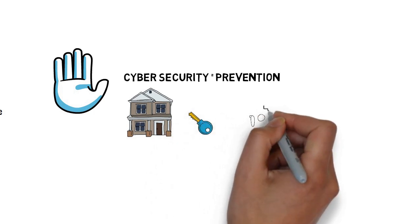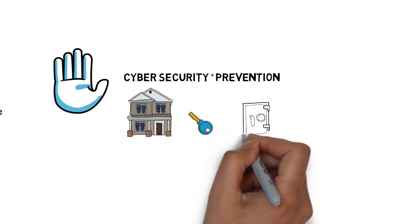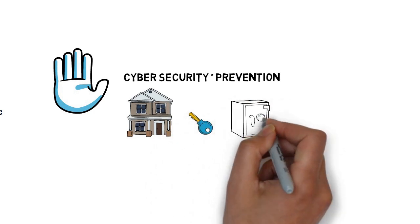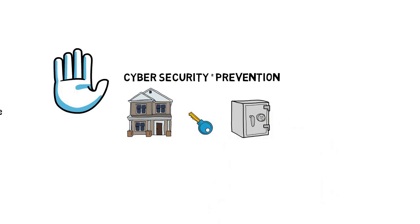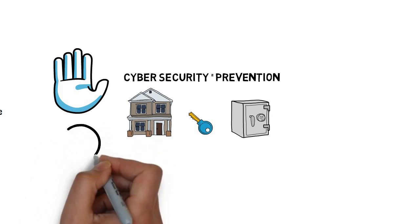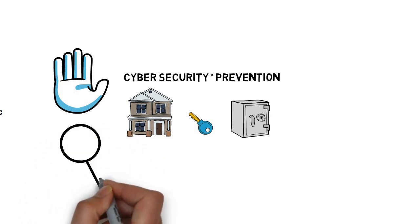You can invest in quality locks for your doors and windows, install an alarm — maybe an alarm with 24/7 monitoring — and you could buy a safe to put your valuables in. All of these measures will make it more difficult for anyone to break into your house and steal your valuables.